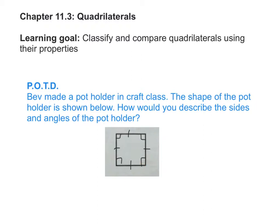Does anyone have anything they would like to add? Neha? That potholder is a regular polygon — it has congruent sides and congruent angles. You took it one step further and remembered that a regular polygon is a polygon that has congruent sides and congruent angles.